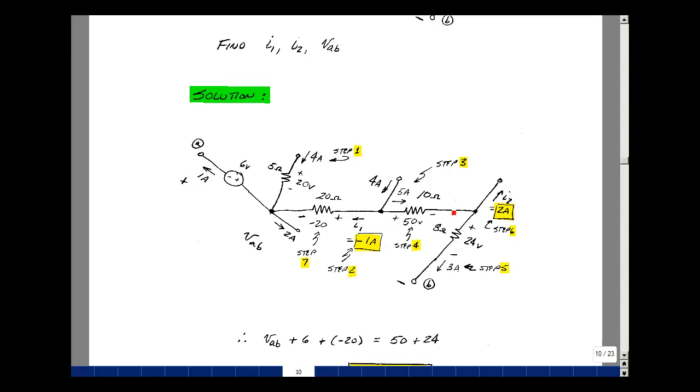So I have 5 amps entering. I have 3 amps leaving, so I must have 2 going in this direction, and that's my sixth step. I2 and I1 were things we were asked to solve for in our problem, so we have those and just put a little box around those.